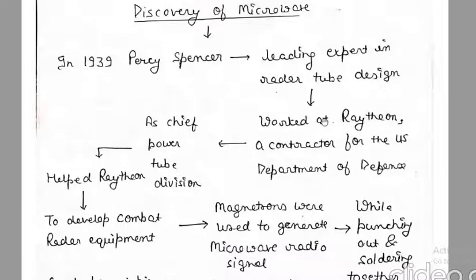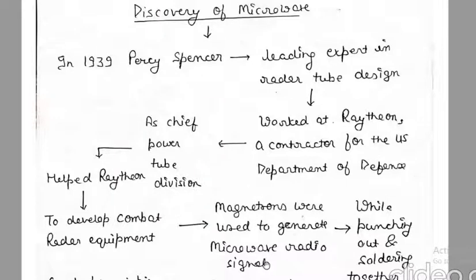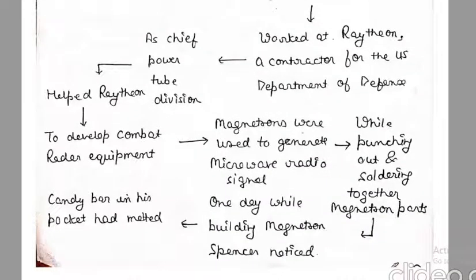Percy Spencer helped Raytheon greatly through the US Department of Defense, securing projects for a lot of combat radar equipment. During that time, Percy Spencer was working on magnetrons for the development of microwave radio signals. Magnetrons were being used for the generation of microwaves, and those microwave signals were being used in radar.